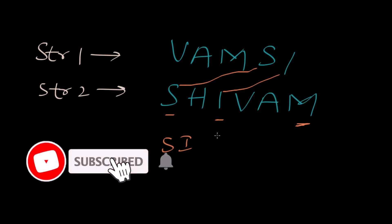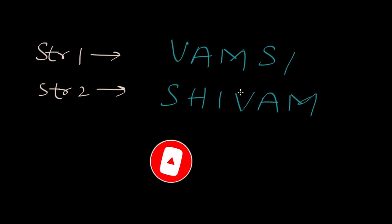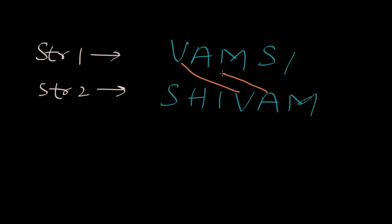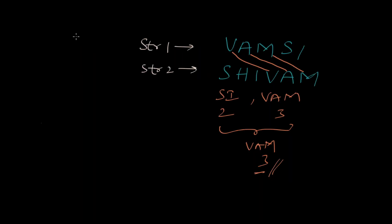Let's look for other subsequences. If we check V — V is present, A is also present, M is also present. So 'Si' is one subsequence of length 2, and 'VAM' is one subsequence of length 3. The longest of these two is VAM, which is three characters long. Hence we return 3 as our answer.